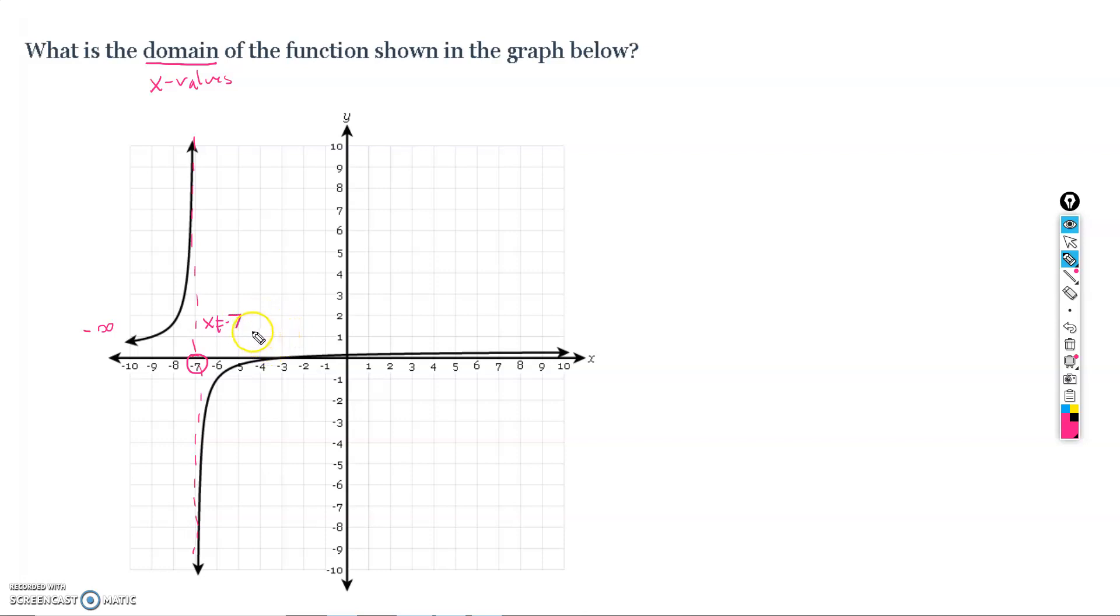So in this function, x will never equal negative 7, but it seems like it continues on its merry way. And it goes all the way right, and it's going to go right forever all the way off to positive infinity. So the domain of this function, then, in interval notation,